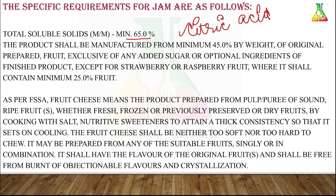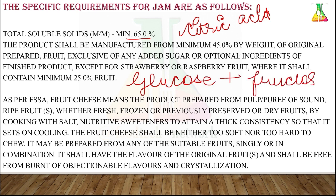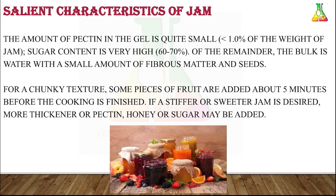Invert sugar is an edible mixture of two simple sugars — glucose and fructose. It is made by heating sucrose with water. So invert sugar is essentially the mixture of glucose and fructose produced from sucrose.